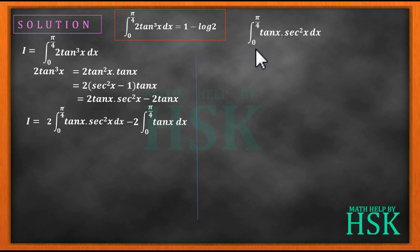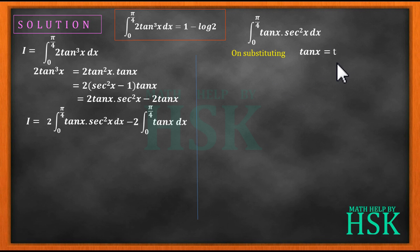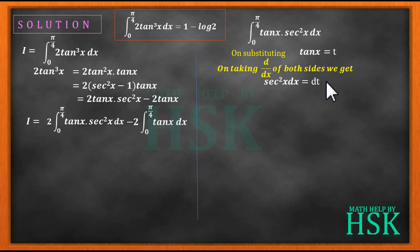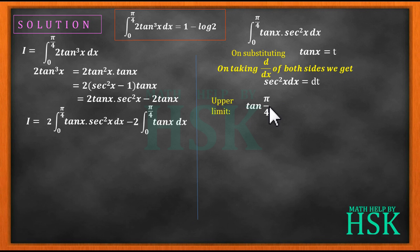The integral ∫tan(x)·sec²x dx from 0 to π/4 is taken separately. I substitute tan x = t, so differentiating both sides gives sec²x dx = dt. The limits also change: the upper limit becomes tan(π/4) = 1, and the lower limit becomes tan(0) = 0.